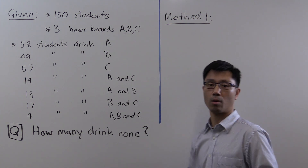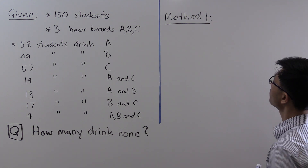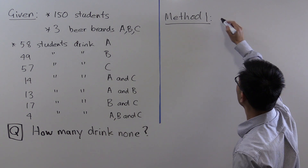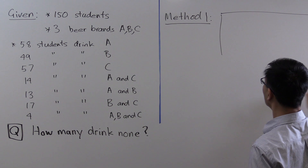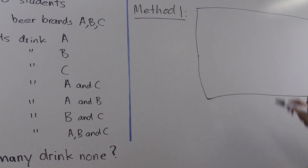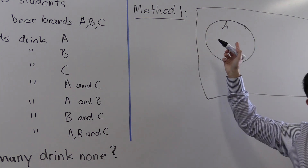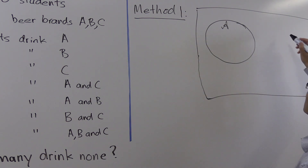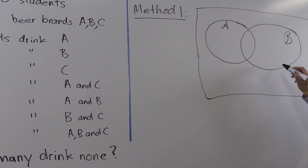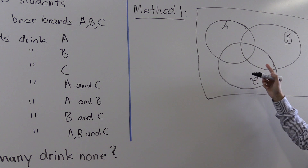There are two ways to do this problem. The first method is the easier one: Method 1 involves using Venn diagrams. We'll draw a big box representing the 150 students. We then let script A denote the set of all students who drink brand A, script B the set who drink brand B, and script C the set who drink brand C.